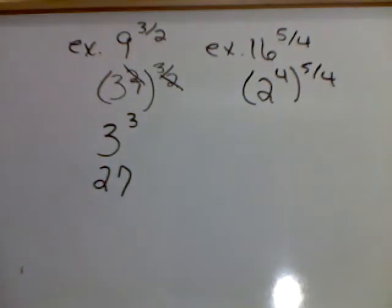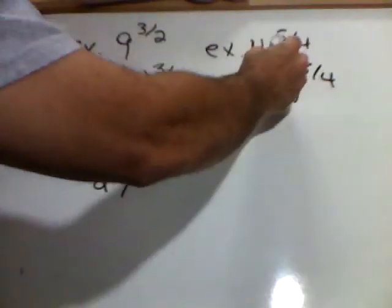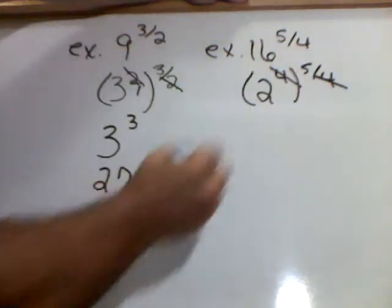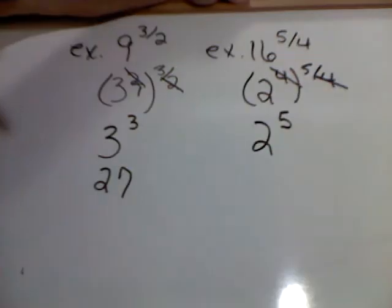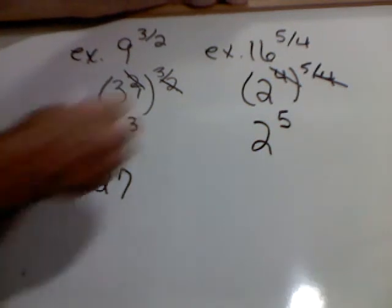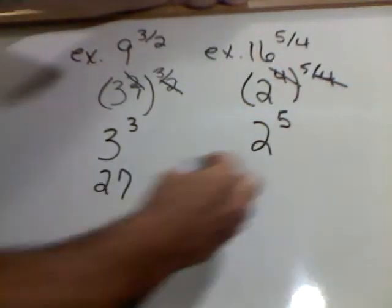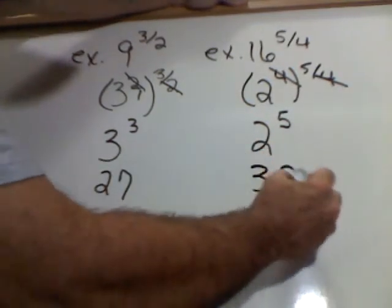And I still have my exponent of 5 fourths. Well, as I did here, these 4's are now able to cancel, giving me 2 to the fifth power. Well y'all, 2 to the fifth power is 32.